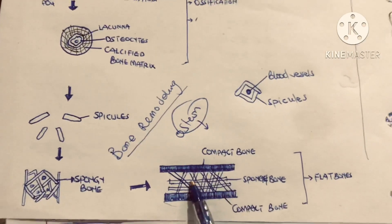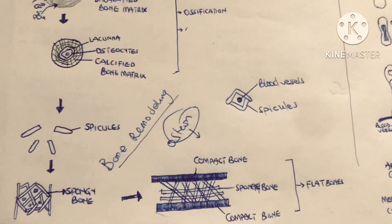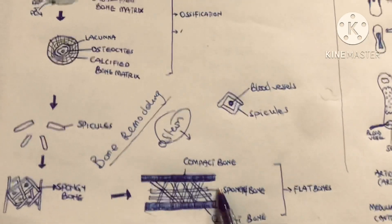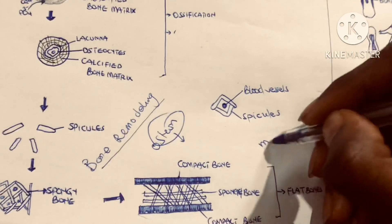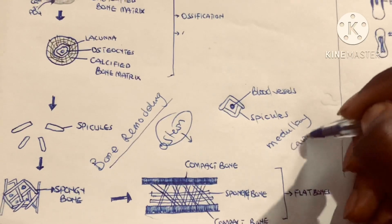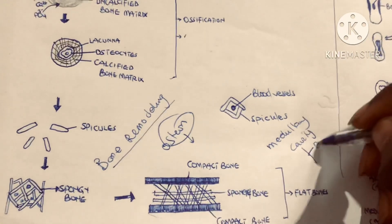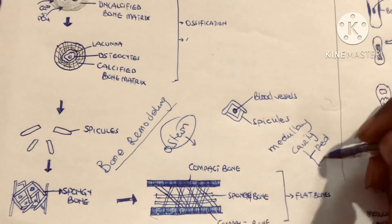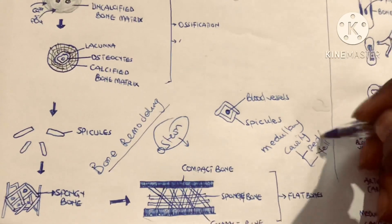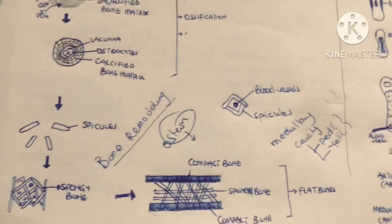That is intramembranous ossification. During bone remodeling the inside where the spongy bones are found can be filled with a hollow space called the medullary cavity. This medullary cavity houses either red bone marrow for infants or yellow bone marrow for adults.